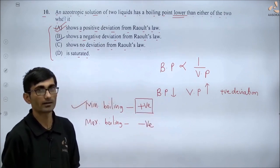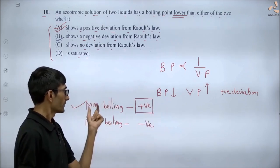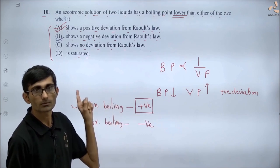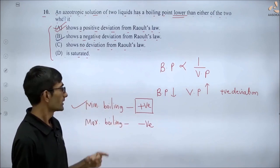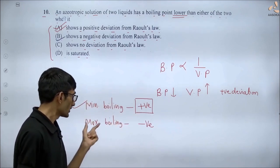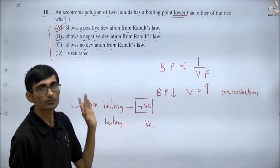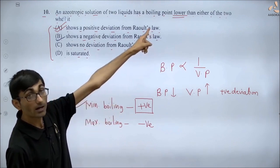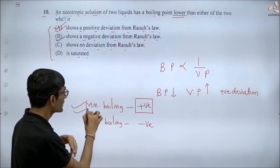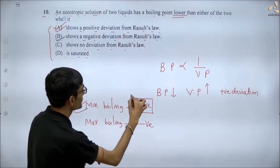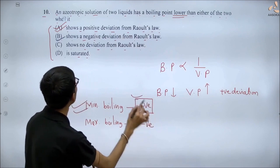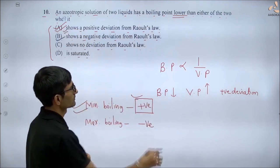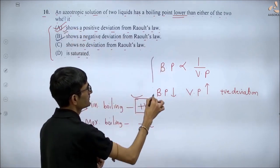ठीक है — उल्टा करना है: minimum boiling azeotrope positive deviation करते हैं, maximum boiling azeotrope negative deviation करते हैं। Boiling point कम → minimum boiling → positive deviation। यह part correct answer है।